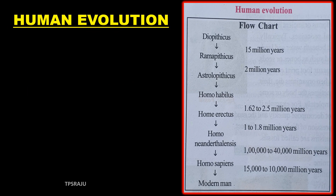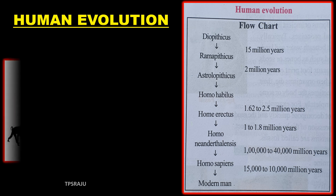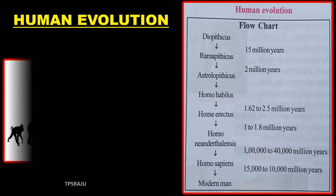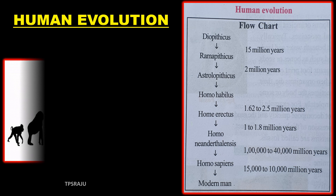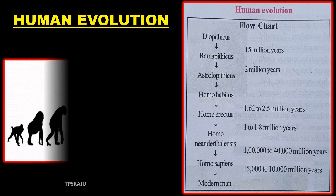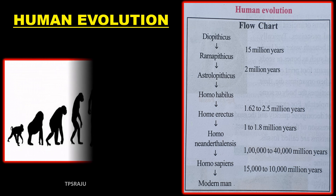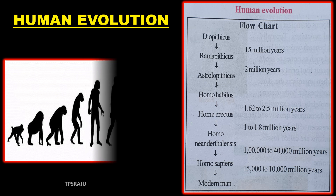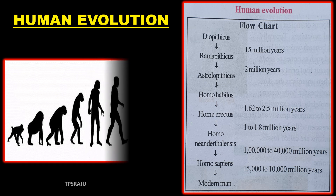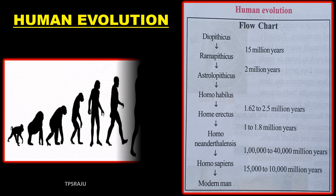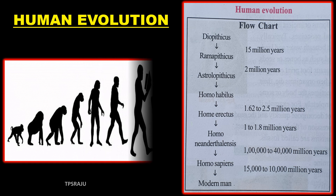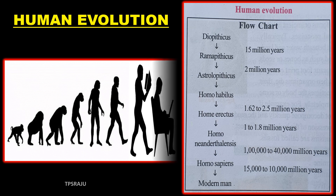This is the flowchart of human evolution: Dryopithecus, Ramapithecus, Australopithecus, Homo habilis, Homo erectus, Homo neanderthalensis, Homo sapiens and modern man.